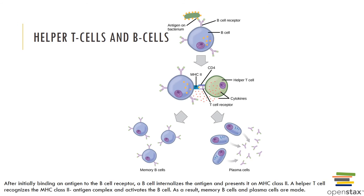Plasma cells can secrete free antibodies that attack the current infection and its antigens. Memory B cells remain in reserve and are primed to respond quickly to subsequent exposures to the same antigen, generating a faster, more efficient secondary response. Once the infection is defeated, plasma cells will undergo apoptosis or programmed cell death. The antibodies secreted by the plasma cells will remain in circulation for an extended amount of time even after the infection is over.